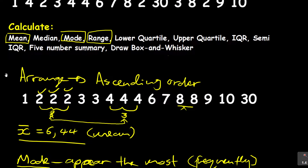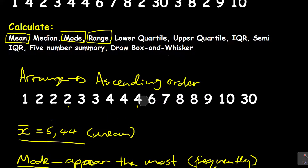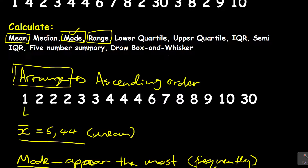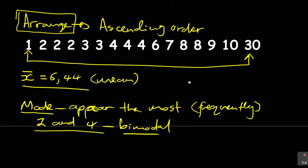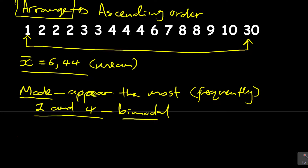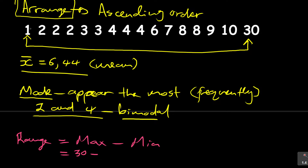The last one for this lesson is the range. When you talk about the range, remember the first step is to arrange the numbers in ascending order — then it becomes easier. The range says look at the first number and the last number. Range equals maximum minus minimum. The maximum is 30, the minimum is 1, so the range is 30 minus 1 equals 29.